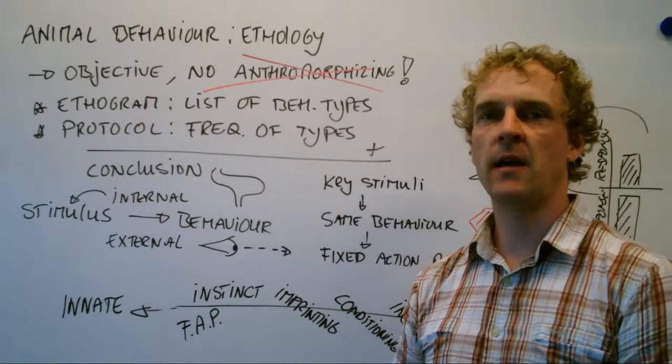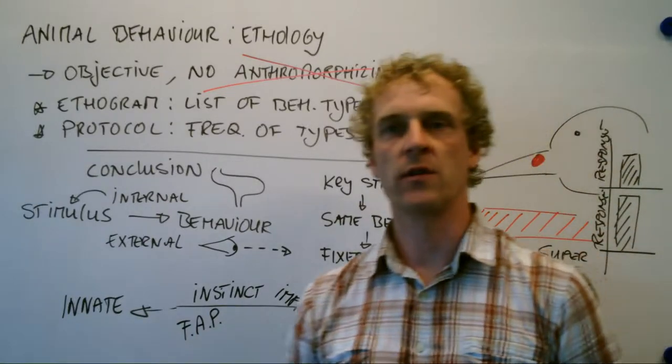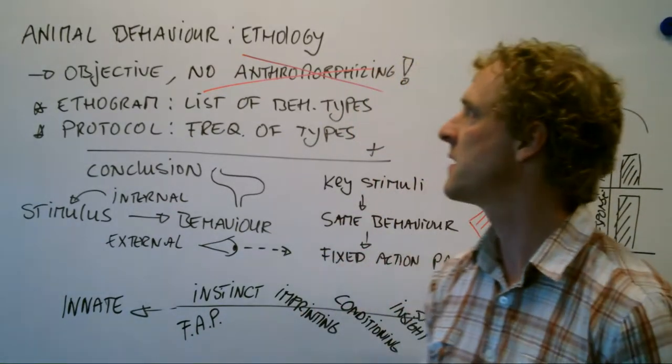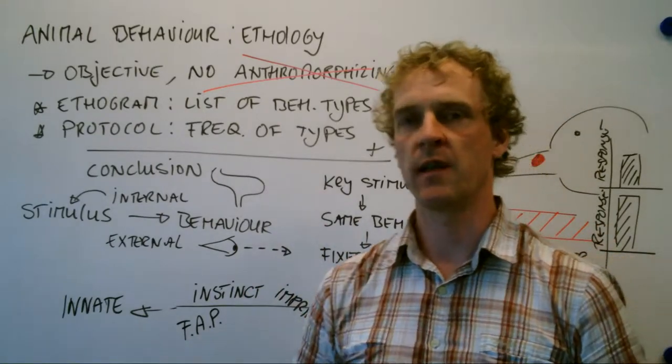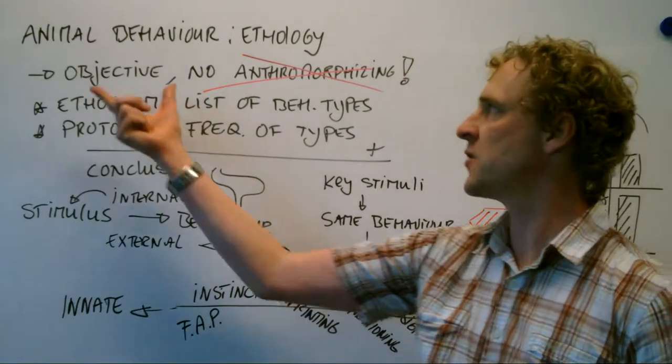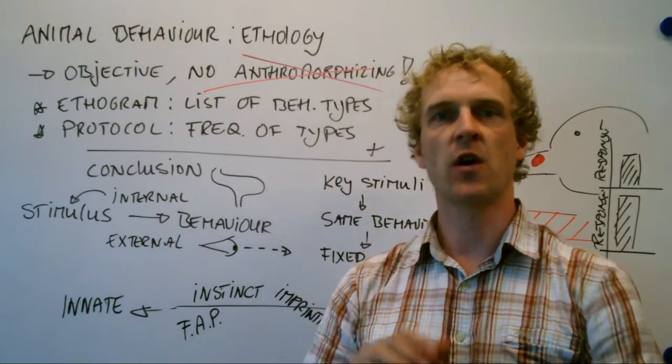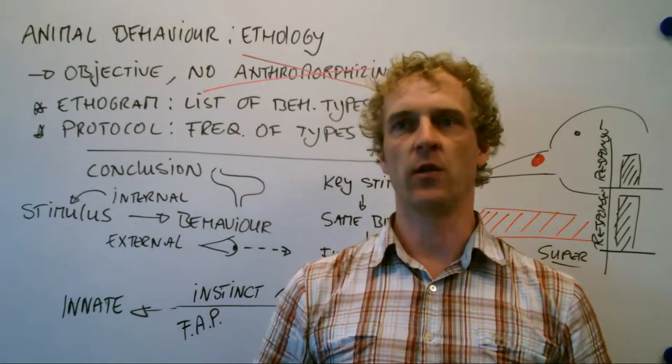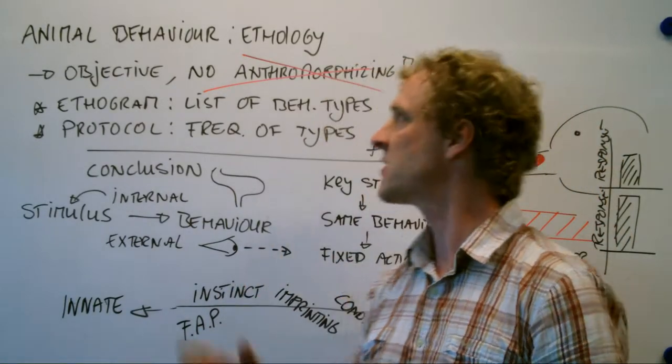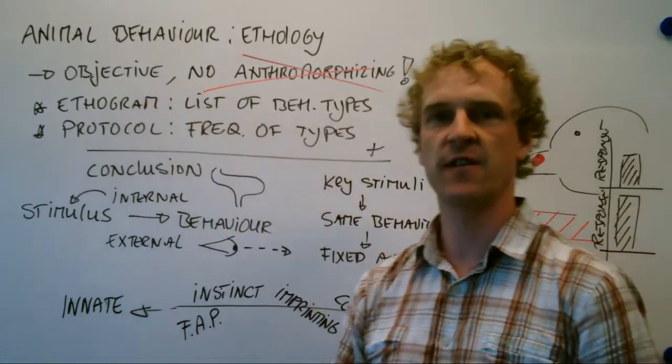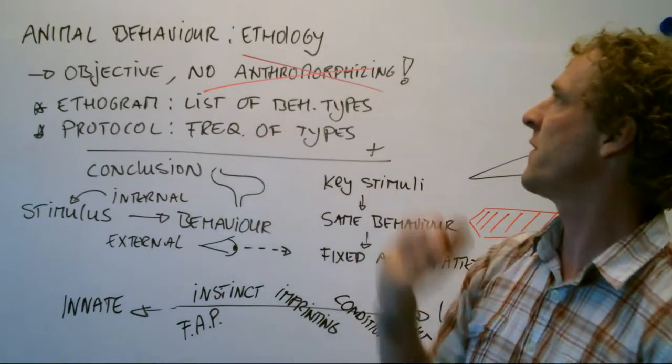Welcome. Today I'd like to talk about animal behavior or the study of ethology. In ethology, one of the main items is always trying to be objective. So if you come home and the dog waggles its tail and jumps at you, you might say the dog likes me. But that's not objective. You can't anthropomorphize.